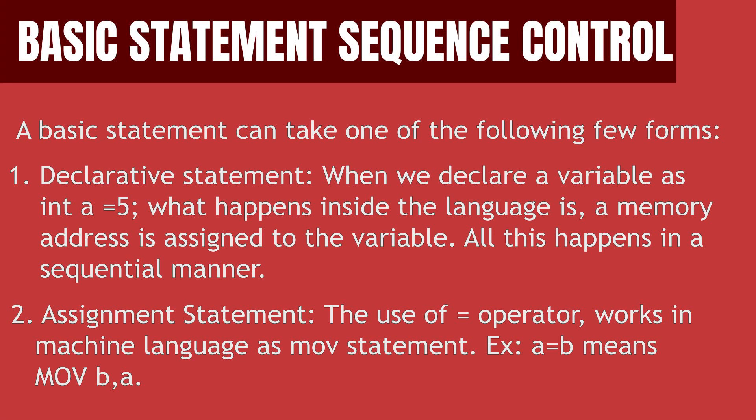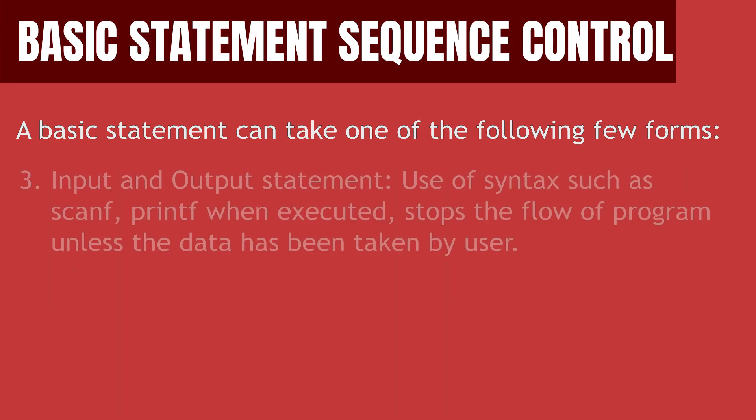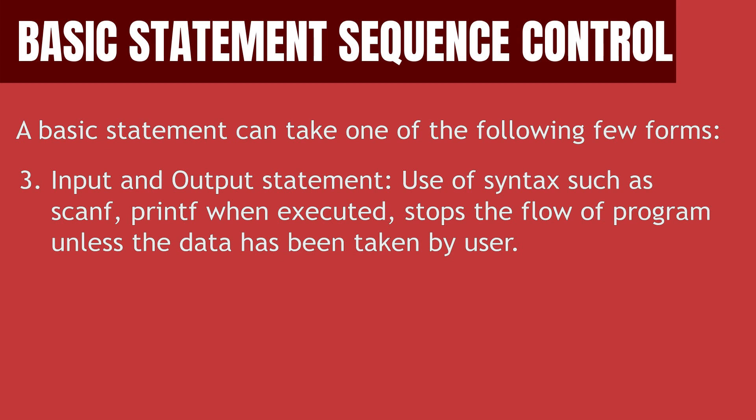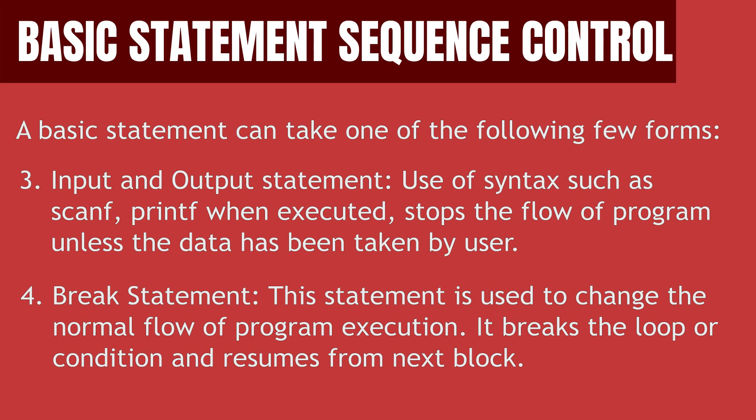For example, when we write that a is equal to b, in machine code, the following statement executes. And lastly, the third type of statement is input-output statement. Since you had a declarative statement, you can assign value to that variable either by assigning it statically or taking input from the users. In C language, we have scanf and printf statements for these. Also note that the program will pause until you have taken the values. Lastly, it's the break statement, which breaks the program flow and resumes from the next block of code. This is mainly used in loops or conditional statements.